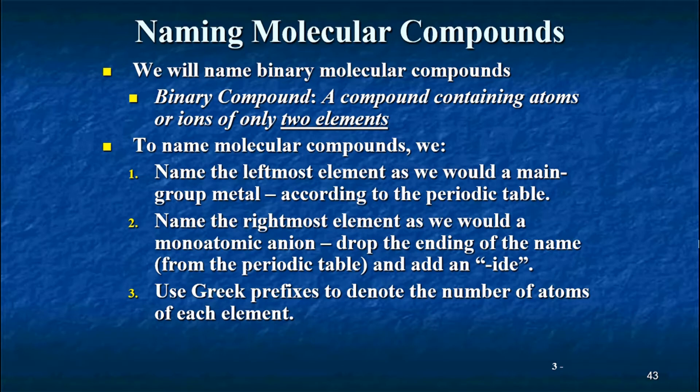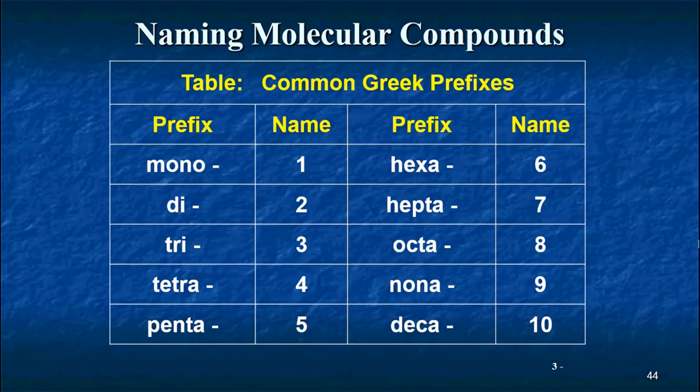Now, the second element, the rightmost one, we're going to change its ending to an IDE form. Yes, it makes it sound as if it were a monoatomic anion, but it's not an anion. We know that already, but we're going to use this form just to help us name the compound. Now, remember in ionic compounds, because the charges of the ions ultimately determine the ratios of them, we didn't have to indicate how many units of each were. In other words, the name of the compound did not have to indicate the ratios of each ion. But in the case of binary molecular compounds, because we have the possibilities of having multiple compounds between the same two elements, we're going to have to indicate how many atoms of each there are. And to do that, we're going to use Greek prefixes to denote the number of atoms of each element.